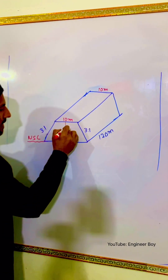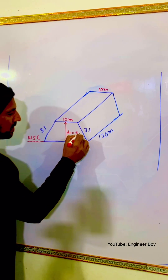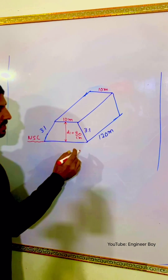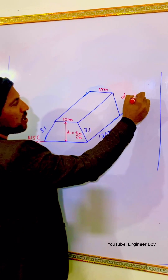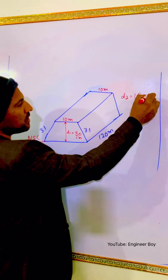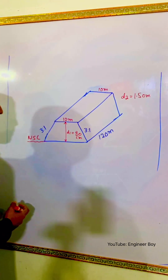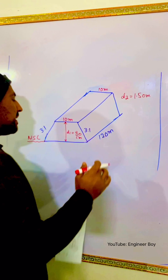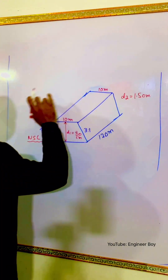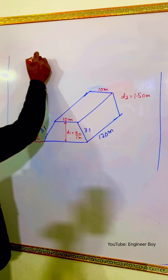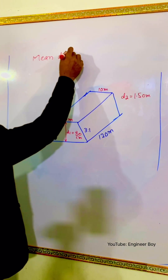The depth at the first section, D1, is 80 centimeters, which is 0.8 meters. At the second section, the depth is different - it is 1.50 meters. So this is the overall data. He has also asked to determine the quantity using the mean depth method.